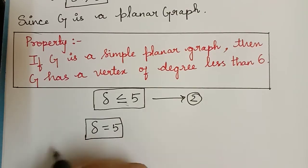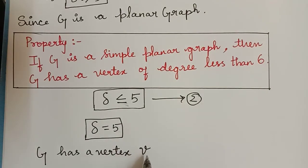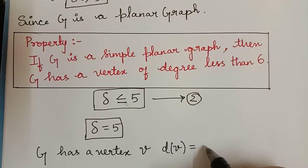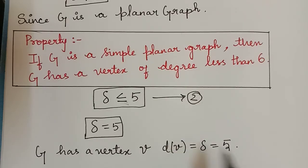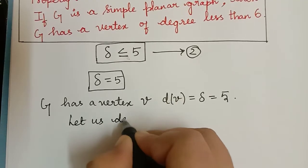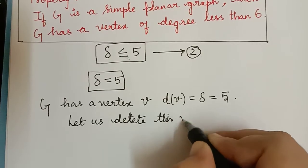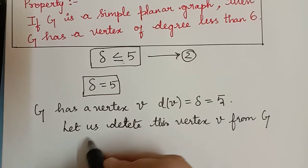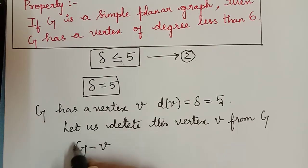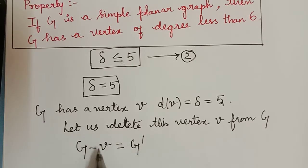Therefore the graph G has a vertex V such that degree of V equals delta, which equals 5. Let us delete this vertex V from the graph G. After deleting, the graph obtained will be G minus V. Let us represent this graph as G dash.